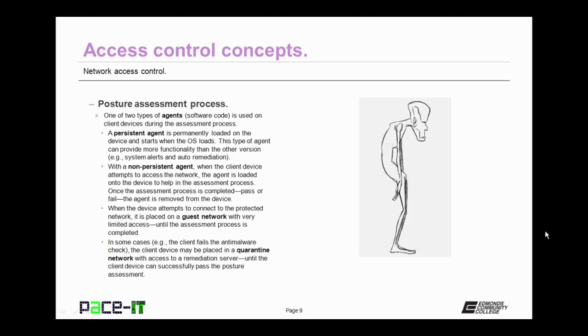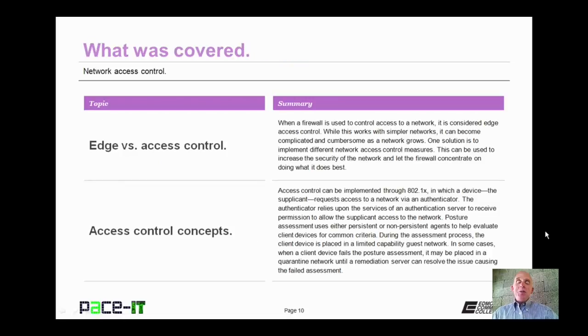When devices attempt to connect to the protected network, they are placed on a guest network with very limited access. They are left on the guest network until the assessment process is completed. In some cases, particularly when the client fails the anti-malware check, the client device may be placed into a quarantine network, which will only have access to a remediation server. And it cannot move beyond that quarantine network until it can successfully pass the posture assessment.